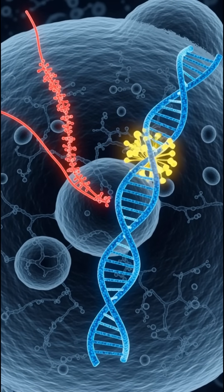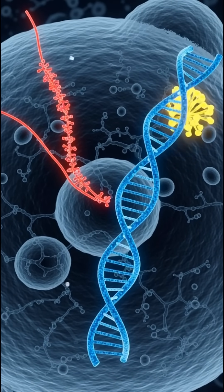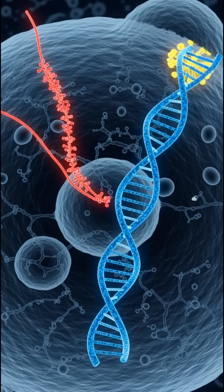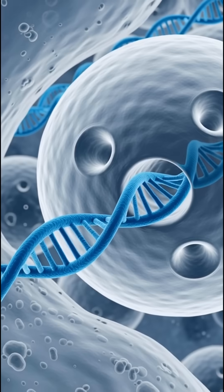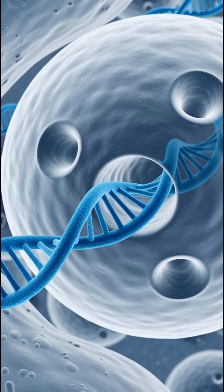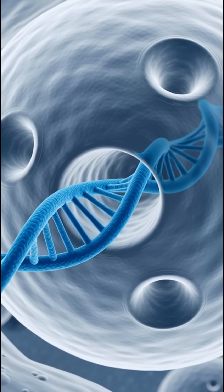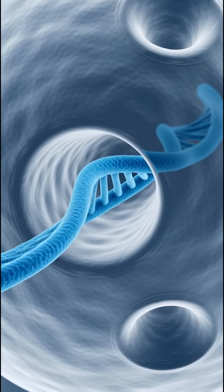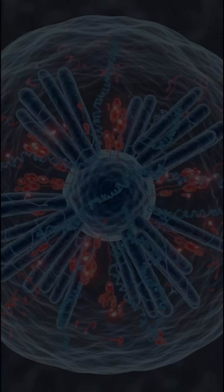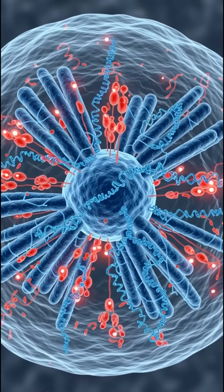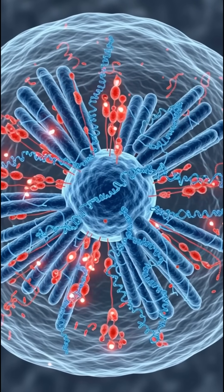The viral envelope then fuses directly with the T-cell's membrane, allowing the virus's genetic core to be injected into the cell's cytoplasm. Inside the host cell, the virus's RNA is reverse transcribed into DNA, a unique step that hijacks the cell's own machinery.